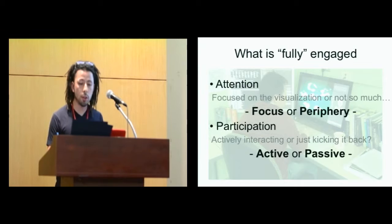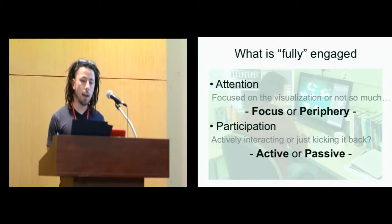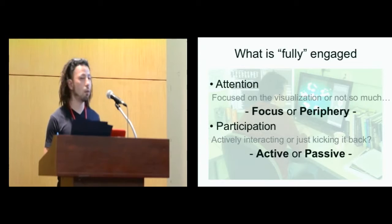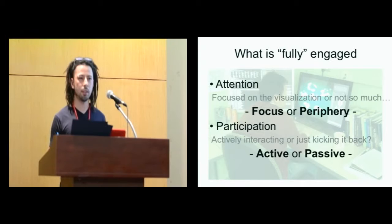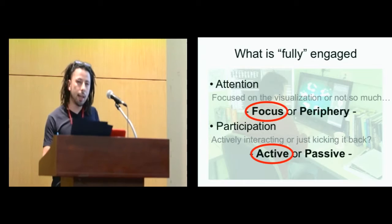For the attention, it's basically is the user focused on the visualization or not so much. If the user is super focused on the visualization it's focused, and if he's not focused on visualization it's periphery, meaning the visualization resides in the periphery of the user's point of view. The participation is basically is the user actively interacting or just looking at the visualization without really actively interacting. We define this state as active or passive. So when I say fully engaged, it's basically the user is super focused on visualization and the user is actively interacting with the visualization to get some knowledge that he is intended to get.